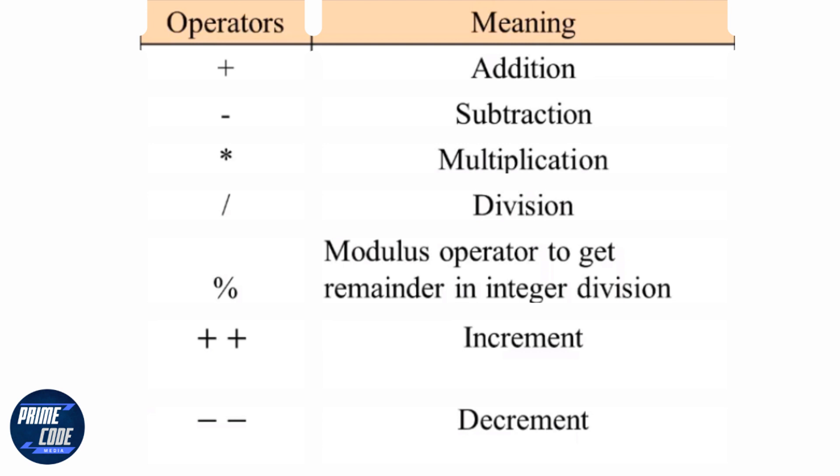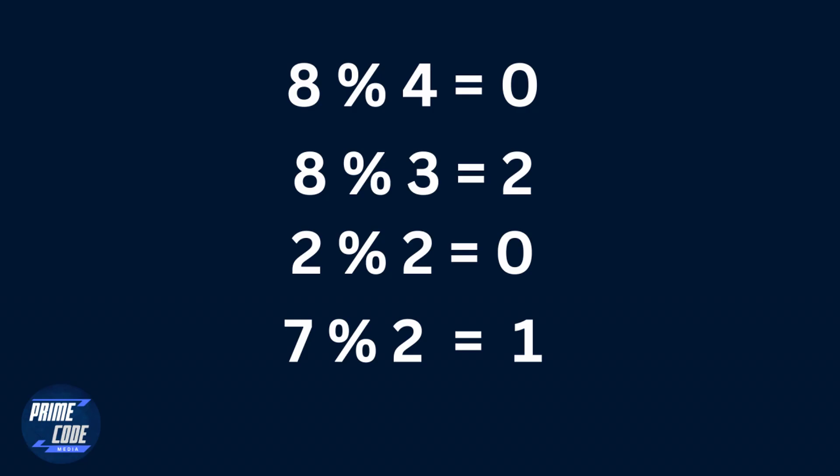Finally we use two asterisks as exponentiation operator. Now let's go back to the modular operator which is represented by the percentage character. This operator returns the remainder of a division of one number by another. For example, eight mod four returns zero because four divides into eight perfectly without a remainder.